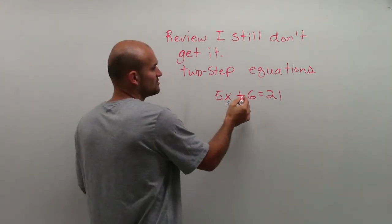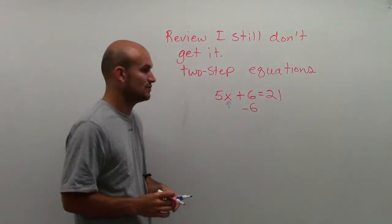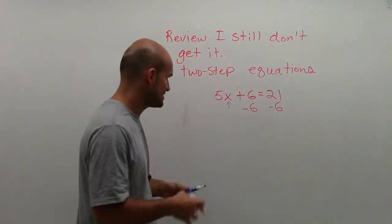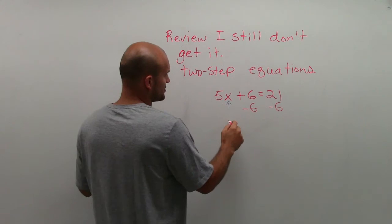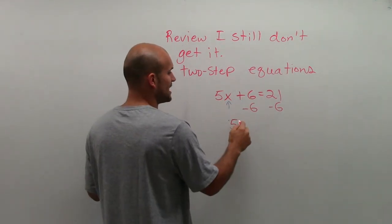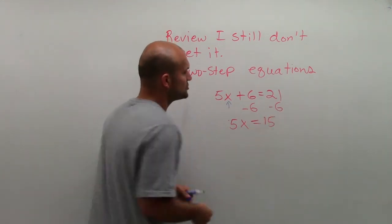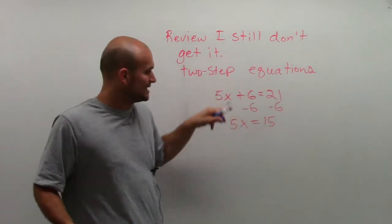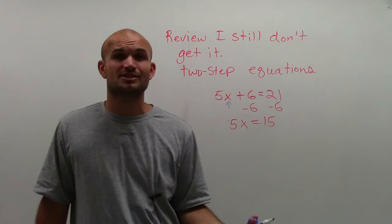Since my variable is being added by 6, I need to subtract 6 first — subtracting 6 on both sides of the equal sign. Positive 6 and negative 6 gives me 0, so now I'm left with 5x equals 15. By subtracting, I've brought a two-step equation into a one-step equation, where now I only have one operation to undo.